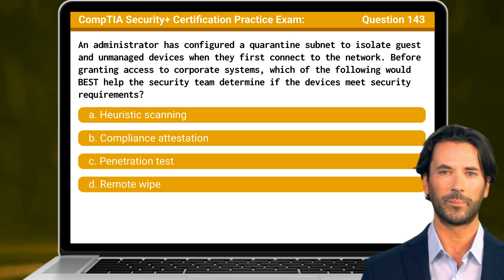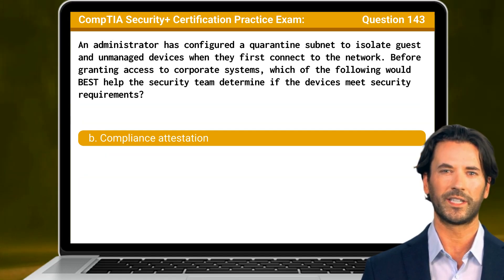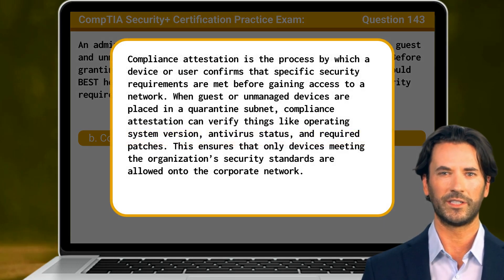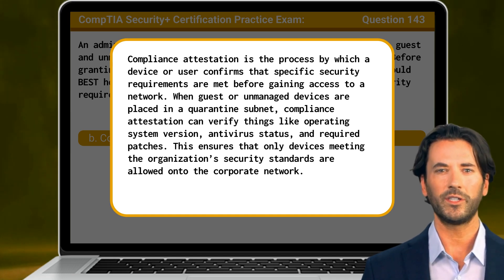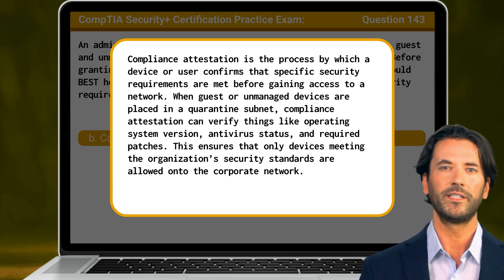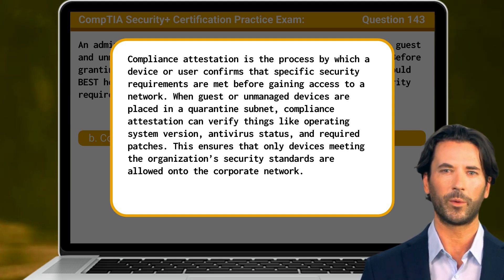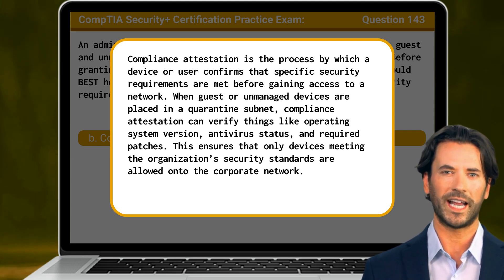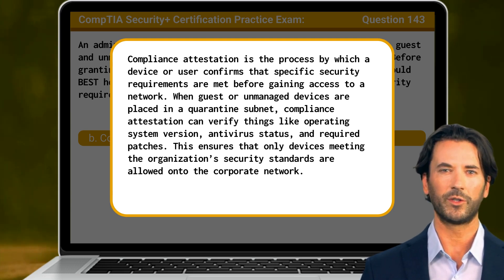The answer is B: Compliance attestation. Compliance attestation is the process by which a device or user confirms that specific security requirements are met before gaining access to a network. When guest or unmanaged devices are placed in a quarantine subnet, compliance attestation can verify things like operating system version, antivirus status, and required patches. This ensures that only devices meeting the organization's security standards are allowed onto the corporate network.